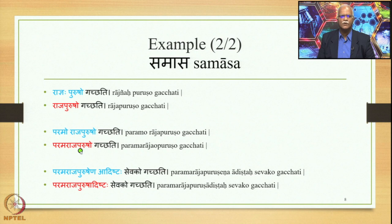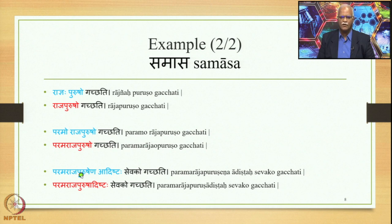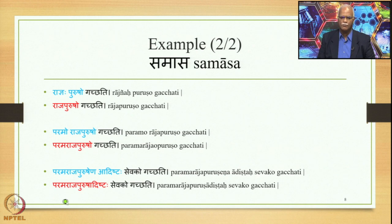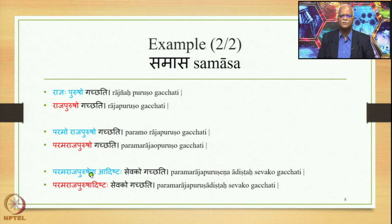Further, this can also undergo the same process. If we now have the sentence Paramarajapurusha Gacchati — the servant ordered by the man of the great king — when this is the input sentence, the theory of compounding processes it and generates the output in the form of Paramarajapurusha Adishtha Gacchati. So here we had four words as input and the resultant form is a three-word sentence.